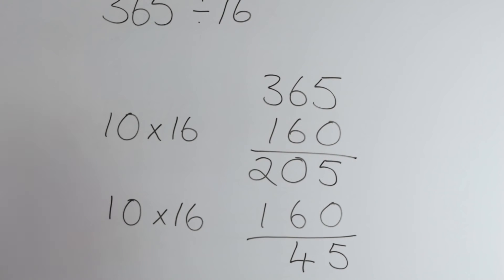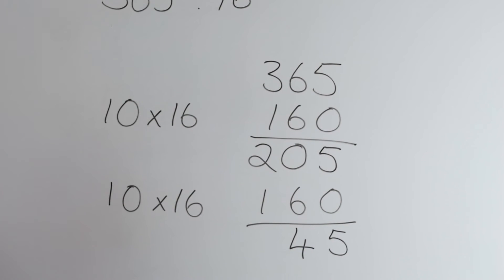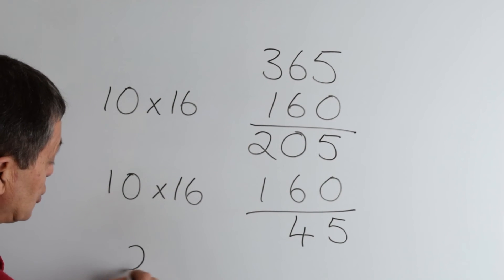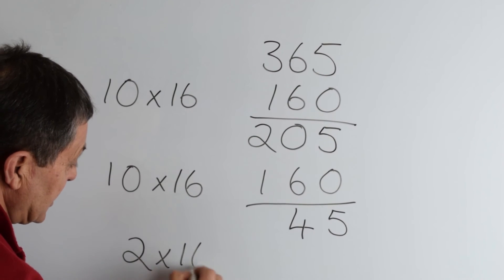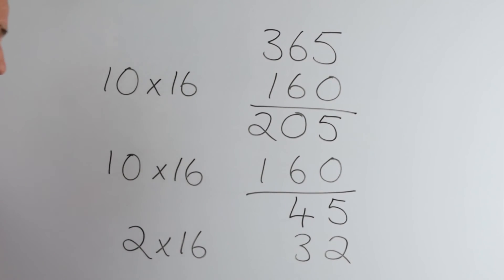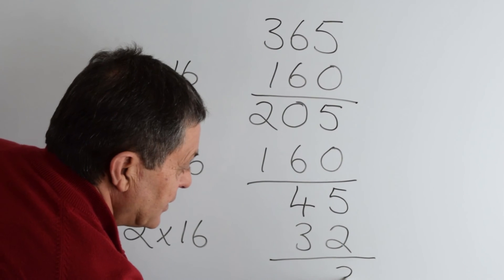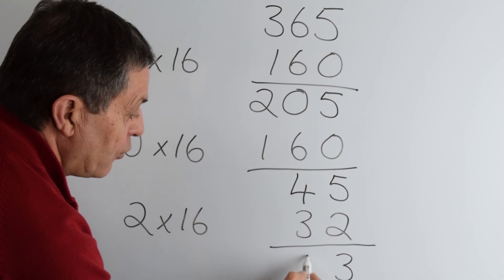Now we need to think of another simple multiple that we could take away from 45. Well, we know that 2 16s would be 32. That's a pretty simple multiple. Let's take that away. 2 from 5 is 3, 3 from 4 is 1.